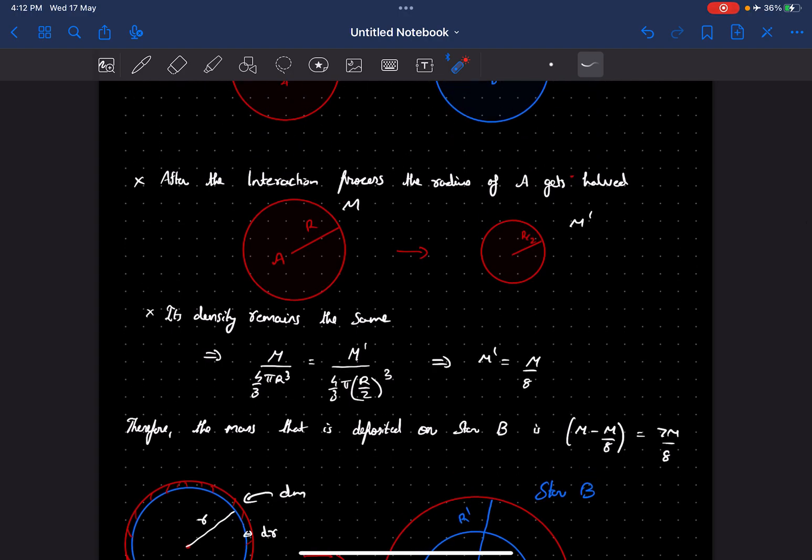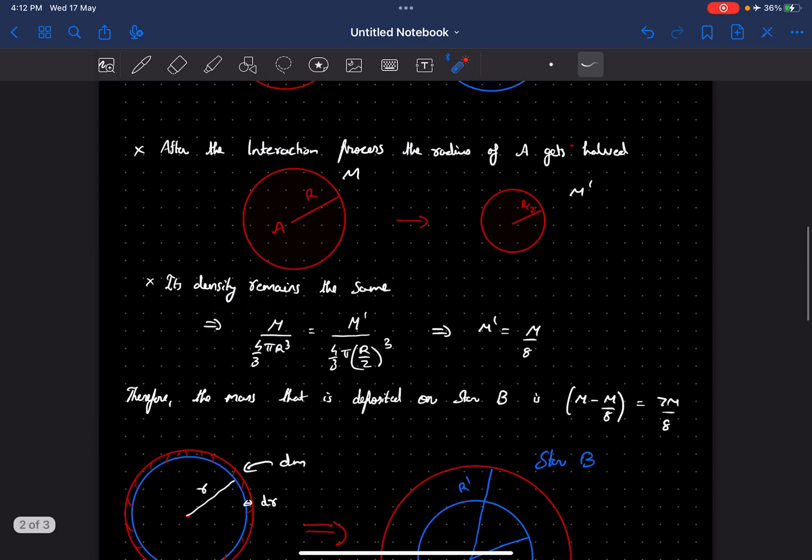In the first case, during the interaction process, it's given that the density remains the same of planet A. Now for density I can write mass by volume of the planet. So initially mass of star A was m and its radius was r.